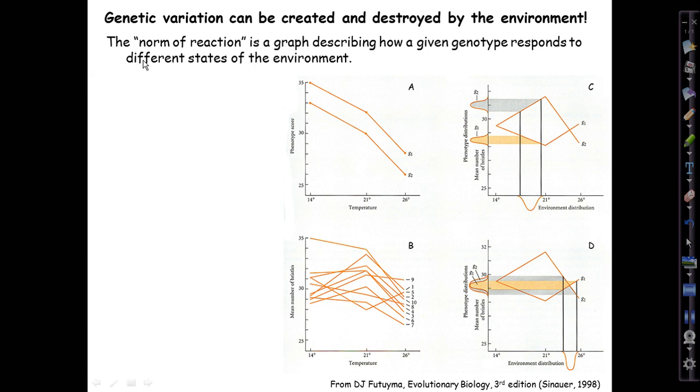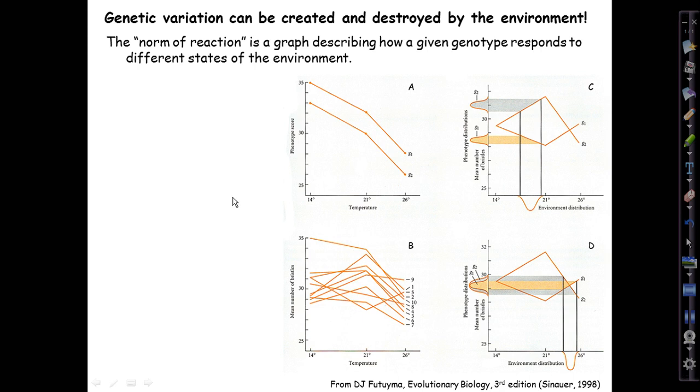We're going to introduce a bit of jargon. The norm of reaction is the name historically given to a graph that describes how a given genotype responds phenotypically to different states of the environment. And this figure on the right shows norms of reaction in four different displays, which we'll walk through.